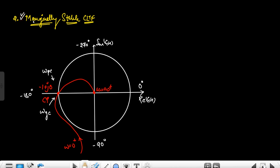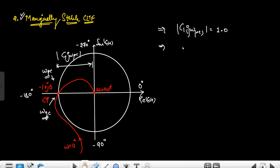The second case is marginally stable CLTF. Here, the polar plot passes exactly through the critical point −1 + j0. The phase crossover frequency ωpc and the gain crossover frequency ωgc coincide at this critical point. The magnitude at ωpc is exactly 1. Therefore, the gain margin, which is the reciprocal of the magnitude at phase crossover frequency, is exactly equal to 1. In dB, this gives 0 dB.